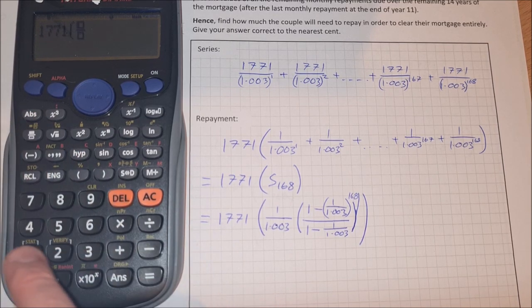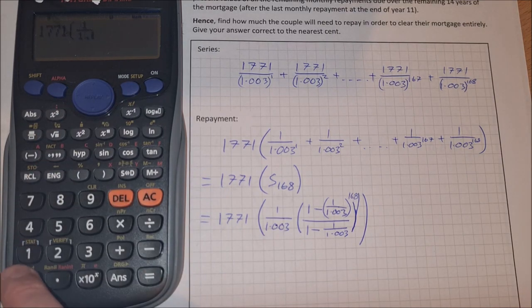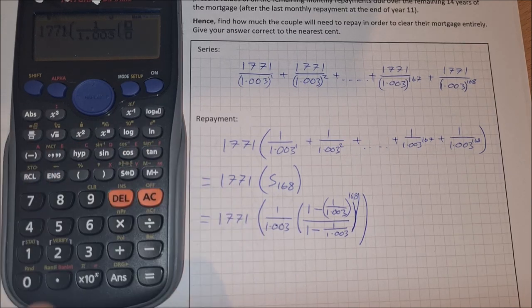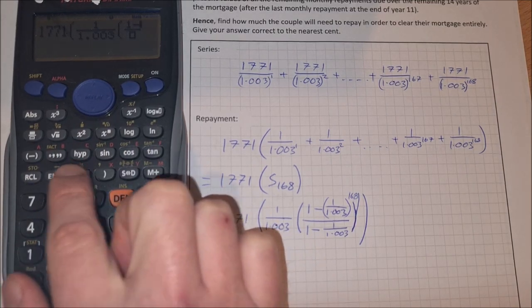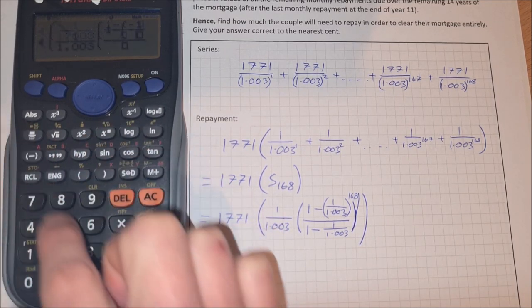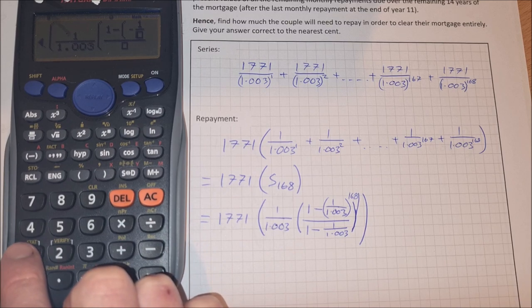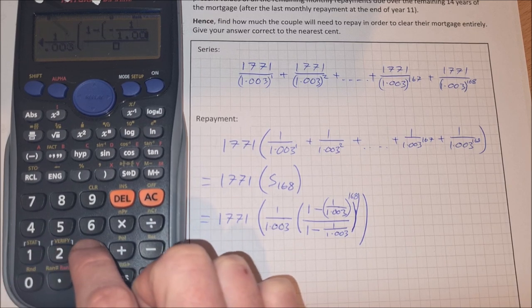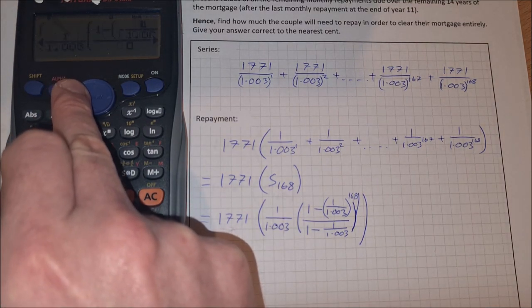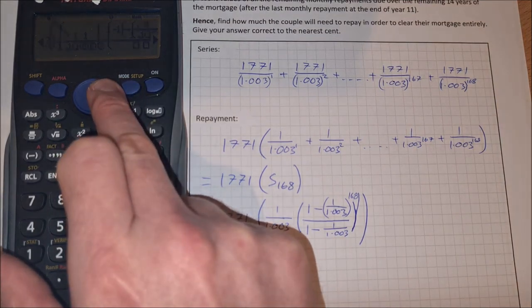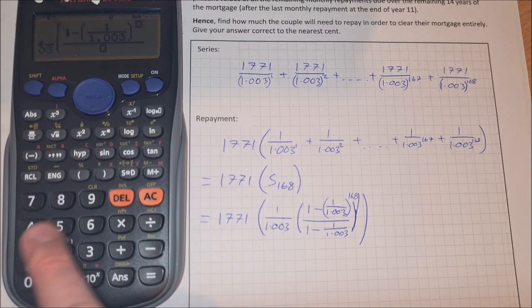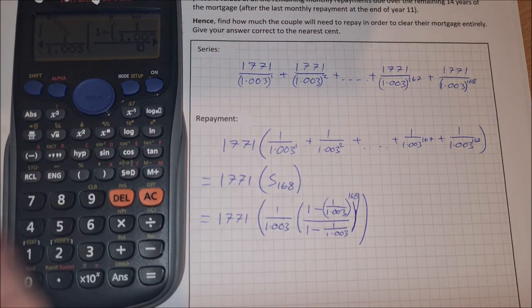So then we'll want to go to our calculator. And again, this is something that is awkward to type into the calculator, and a lot of students would make errors at this stage, so be very careful as you're typing it in. So we have 1771 times, and we have a fraction then of 1 over 1.003, then that is times, we have another fraction, 1 minus, and then inside that we have another fraction, 1 over 1.003. And then this fraction here is to the power of 168.